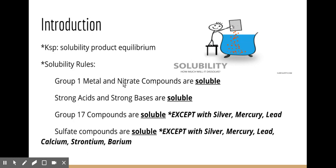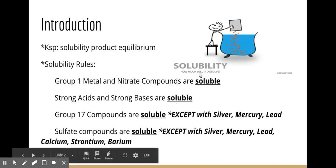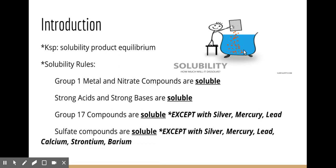At the very beginning of class, we talked about solubility rules in the stoichiometry unit. A quick review: Group 1 metals and nitrate compounds are classified as soluble — meaning when that solid is put into a container, it will break up into its ions, which we call aqueous. Strong acids and strong bases also fall into this category as soluble; they will always break into their ions.